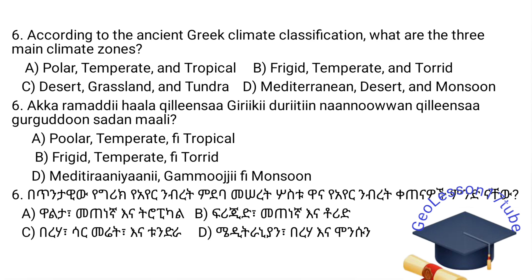The correct answer is Frigid, Temperate, and Torrid. Frigid corresponds to the Polar zone. The degrees between the zones: Frigid covers the polar regions, Temperate covers the middle latitudes between both hemispheres, and Torrid — from zero degrees to 23.5 degrees — corresponds to the Tropical zone.